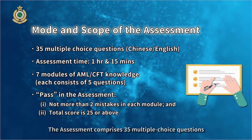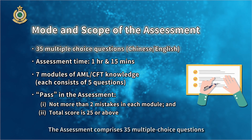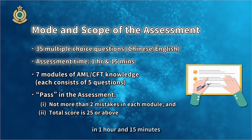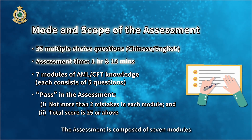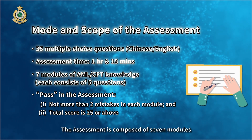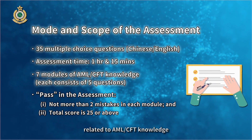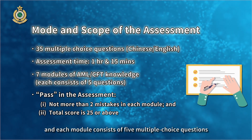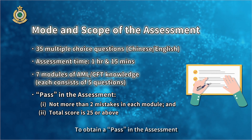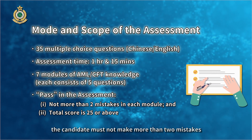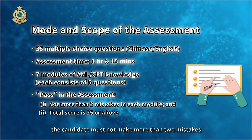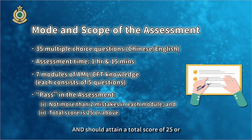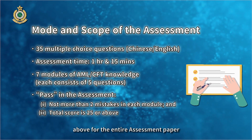The assessment comprises 35 multiple choice questions. Candidates are required to complete the assessment in one hour and 15 minutes. The assessment is composed of seven modules related to AML-CFT knowledge, and each module consists of five multiple choice questions. To obtain a pass, the candidate must not make more than two mistakes in each module and should attain a total score of 25 or above for the entire assessment paper.